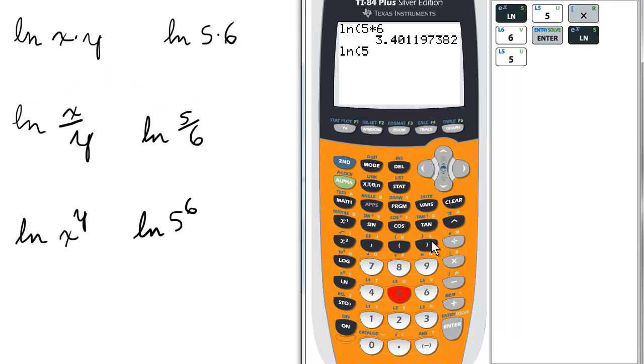ln of 5, close parentheses, plus ln of 6. The second one, you do not have to close parentheses. So we do this, we get the same answer.